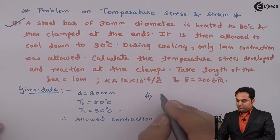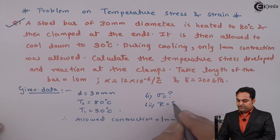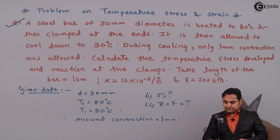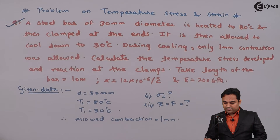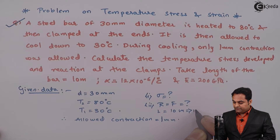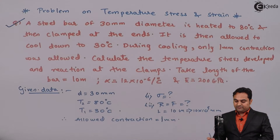We have to find out the temperature stress and reaction, which is denoted by F — that is the reaction offered by the clamps. Take the length of the bar as 10 meters, or 10 into 10 raised to 3 mm. The alpha and E values are also given.